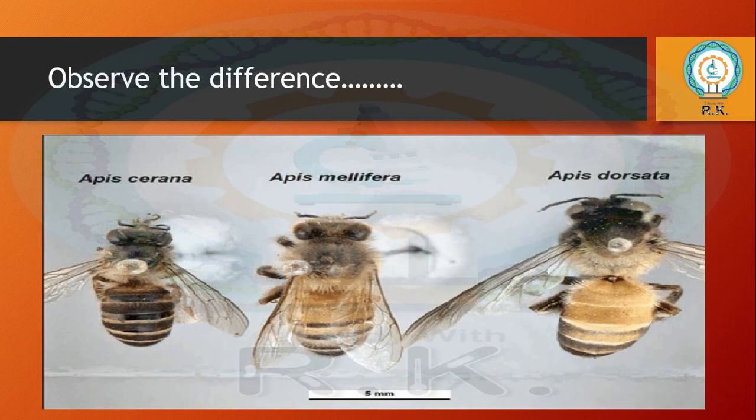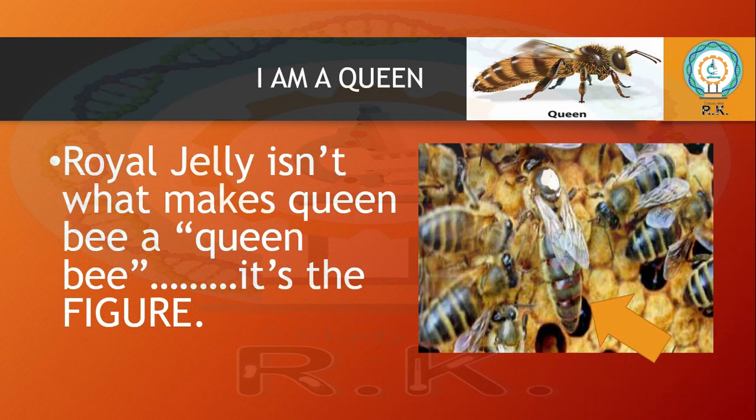Here is a photograph showing all the different species. You can observe the differences: the first is Apis serrana, then Apis mellifera, and Apis dorsata. You can see that Apis dorsata is the largest among the others.